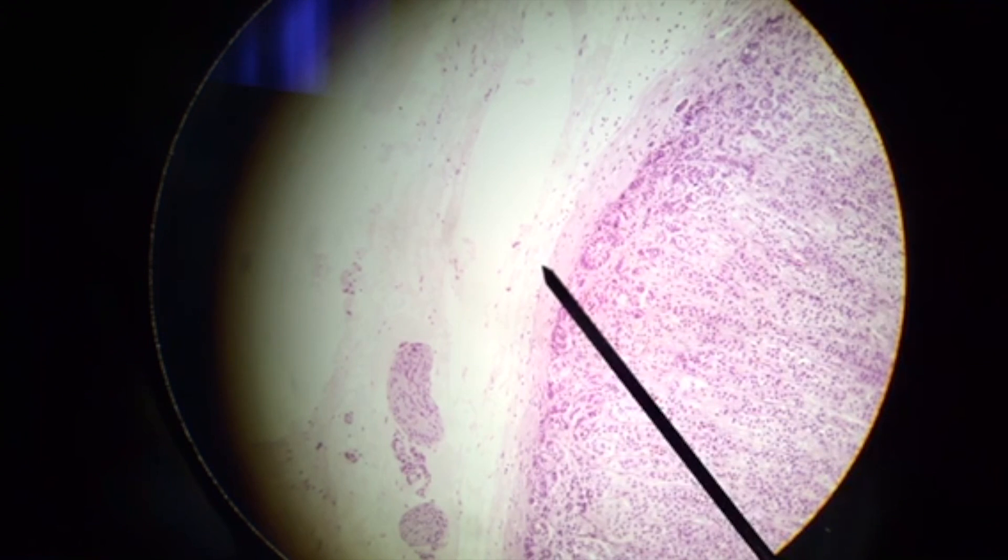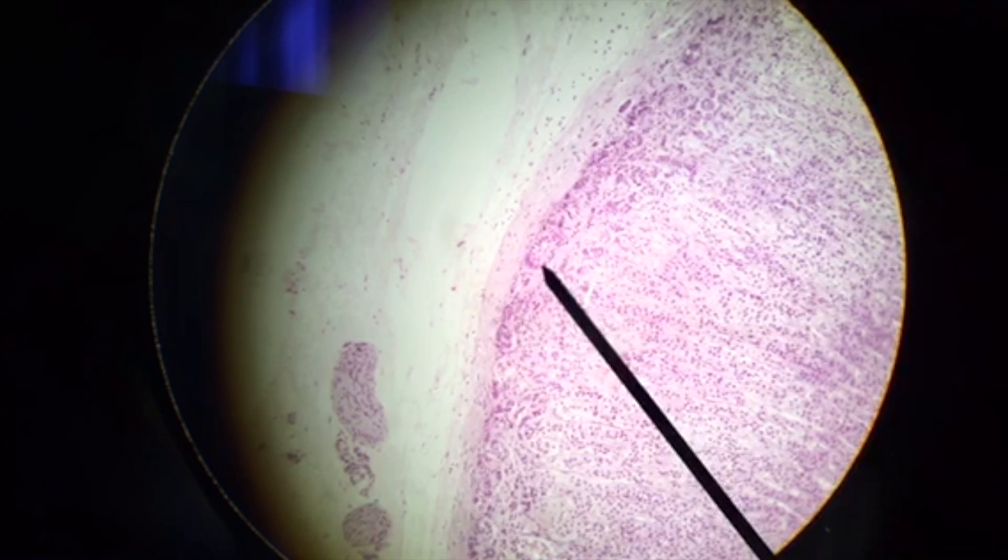The next two regions we're going to look at are the cortex and the medulla. Let's take a look at the cortex. The cortex is comprised of three concentric zones.